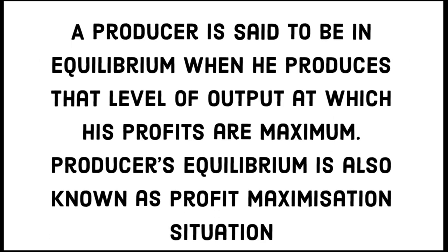A producer is said to be in equilibrium when he produces that level of output at which his profits are maximum. So producer equilibrium is also known as the profit maximization situation.